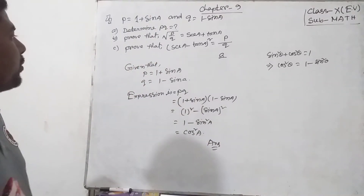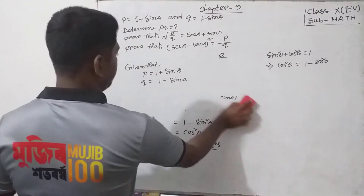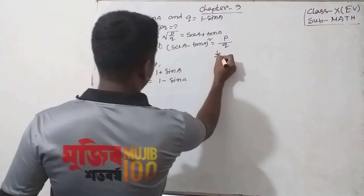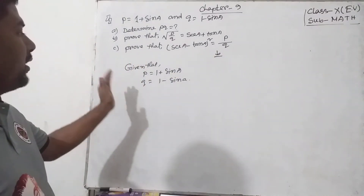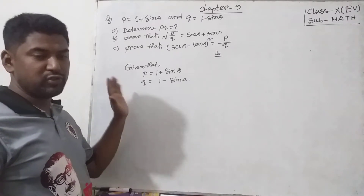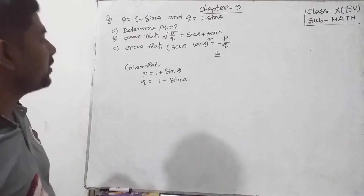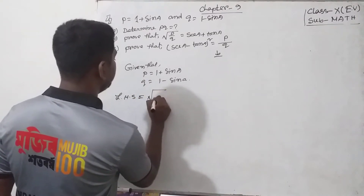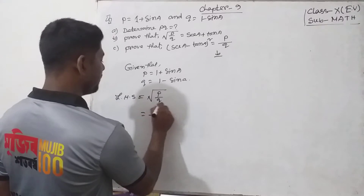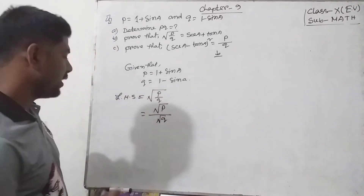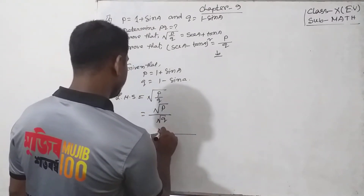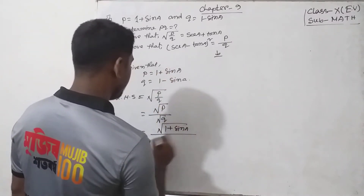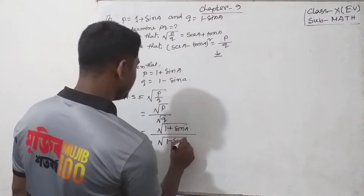Number B. Prove that root over P by Q equals sec A plus tan A. Left hand side: root over P by Q, which we can write as root over P divided by root over Q. Putting the value of P and Q: value of P equals 1 plus sin A, and value of Q equals 1 minus sin A.